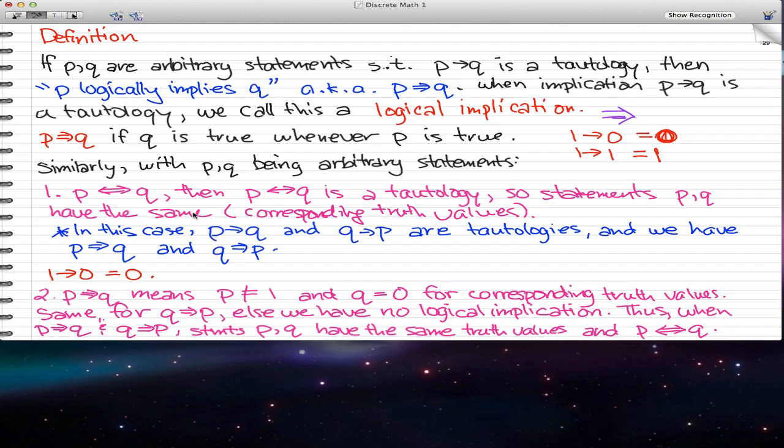In this case, P implies Q, and Q implies P are tautologies. And we have P logically implies Q, and Q logically implies P.